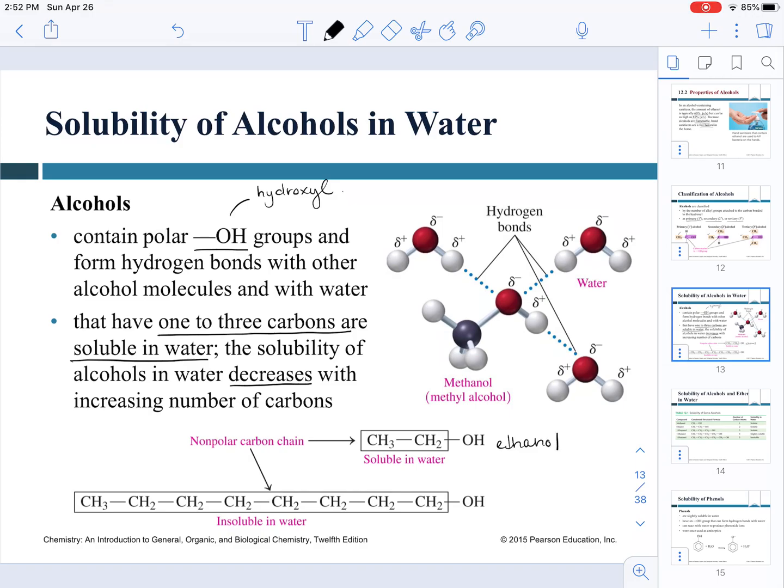If we compare it to the molecule that we have below that contains one, two, three, four, five, six, seven, eight carbons, so this is one-octanol. One-octanol because it has a lot of carbon atoms, more than four, it is insoluble in water.